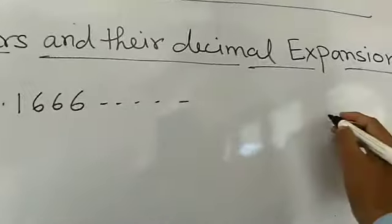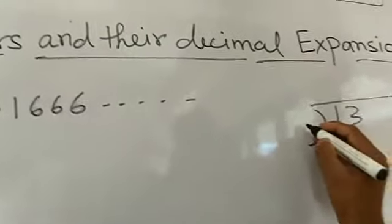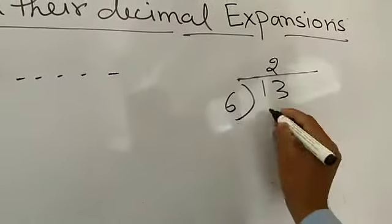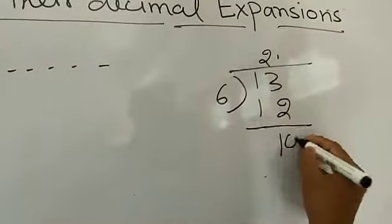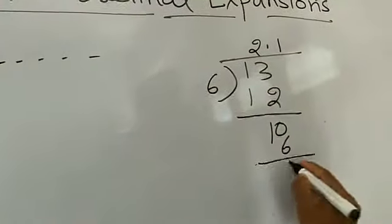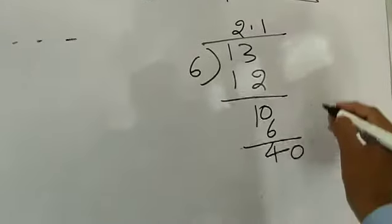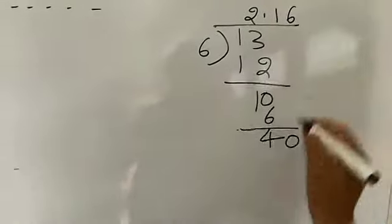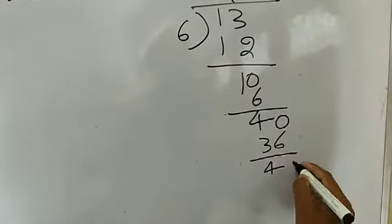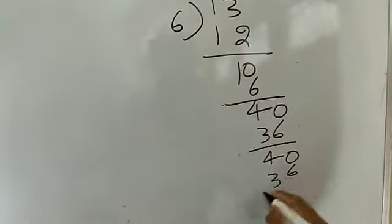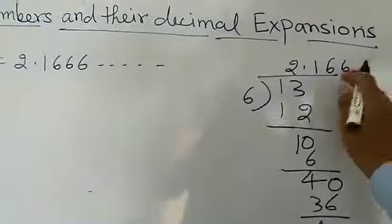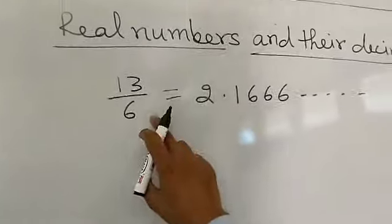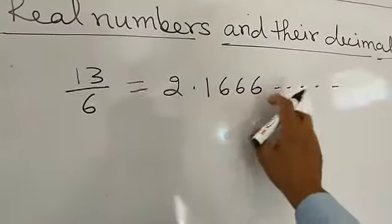Here I will explain: 13 divided by 6. 6 goes into 13 twice (12), remainder 1. Put the decimal, then 6 goes into 10 once with remainder 4, giving 6 again and again — 36, remainder 4 — repeating infinitely. So the decimal value of 13 by 6 is 2.1666 and so on.